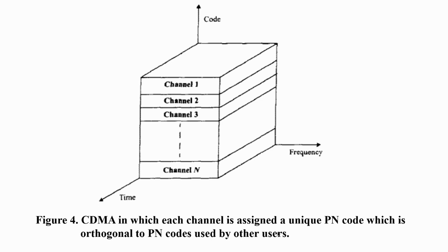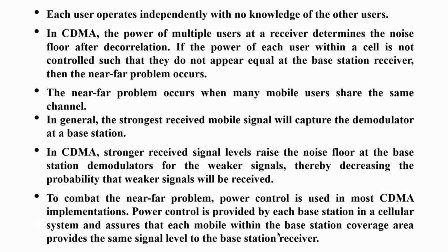In CDMA, the same time slot and same frequency are used, but channels are differentiated by their codes. Each user acts independently without knowledge of the other users. CDMA combines the power of multiple users, and the receiver determines the noise floor after decorrelation. If the power of each user within the cell is not controlled, a problem arises called the near-far problem.